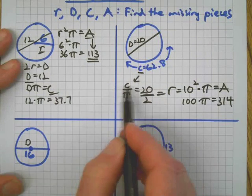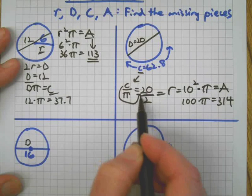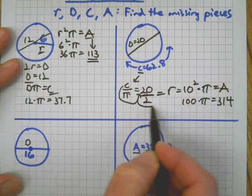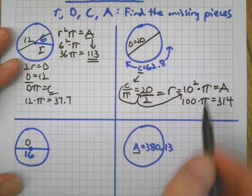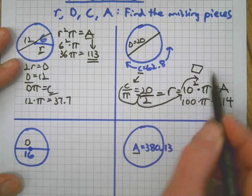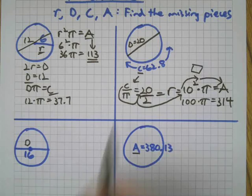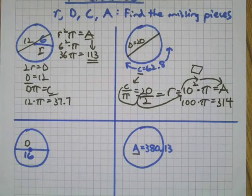So see, on this one we made the connection. We started with circumference, worked backwards to get diameter, continued to work backwards to get radius, then we built it back up by squaring it, then built it up some more with pi. So we completed this entire chain here, going from circumference to area.